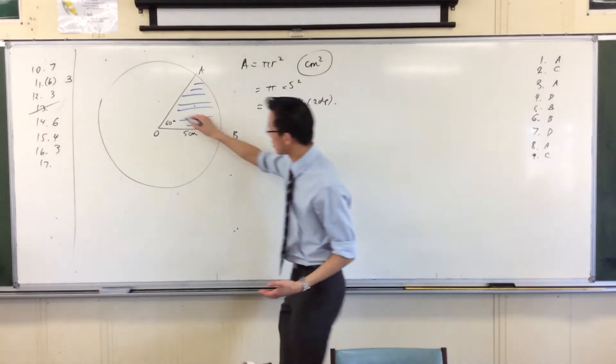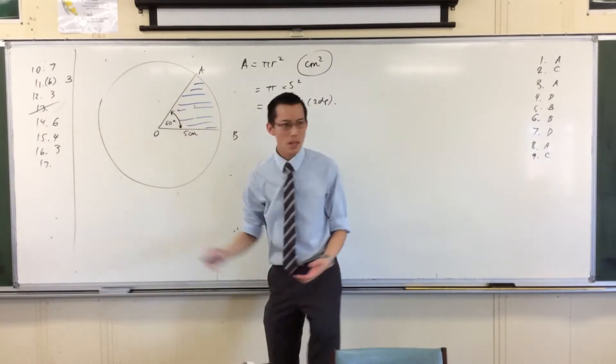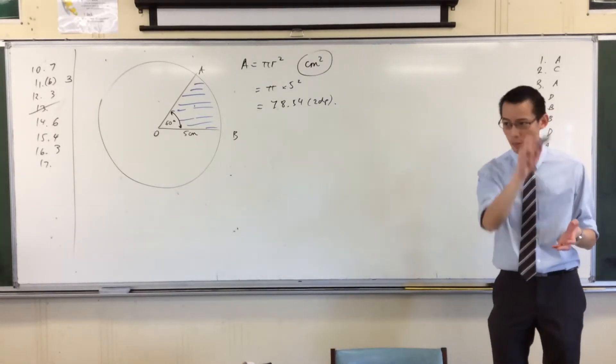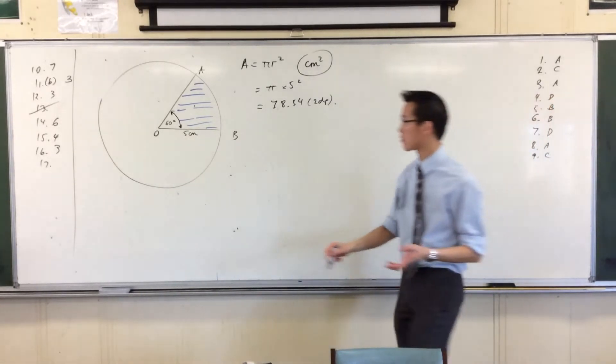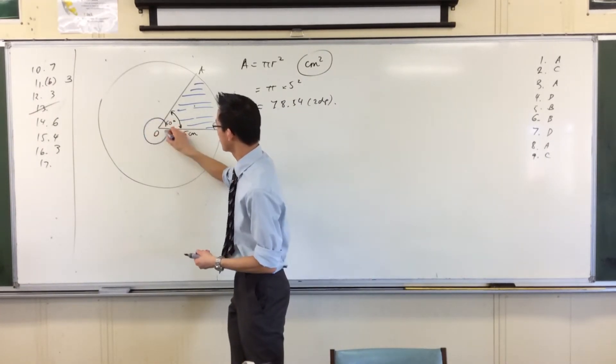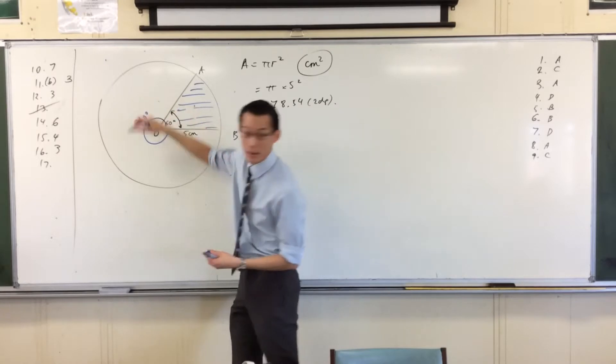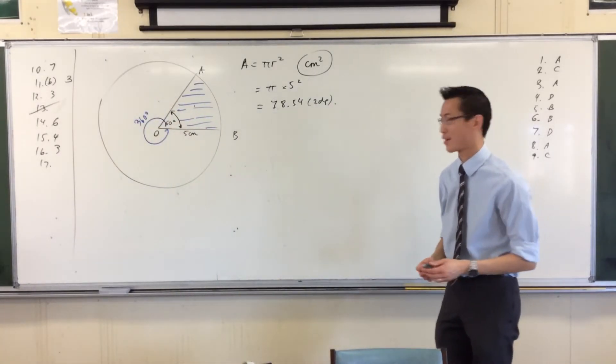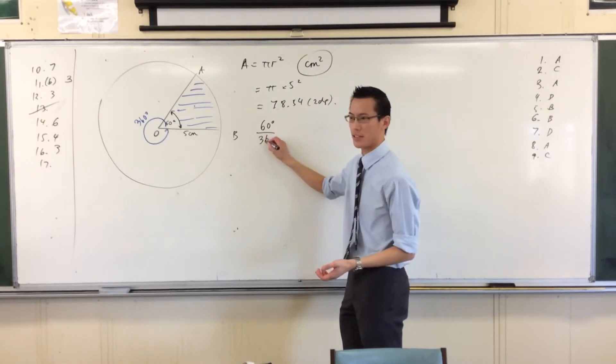So you've got 60 degrees here. You need to remember, what's the whole circle? What's all the way around? It's 360 degrees. So I might put that in another color. 360 degrees. So out of those 360 degrees, we've got 60 of them. 60 degrees out of 360.